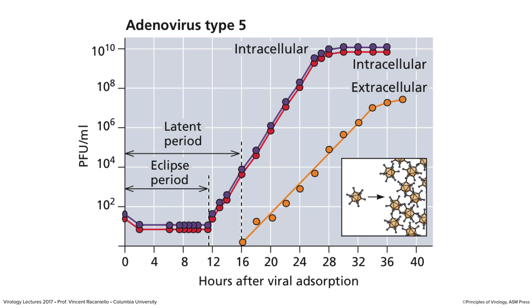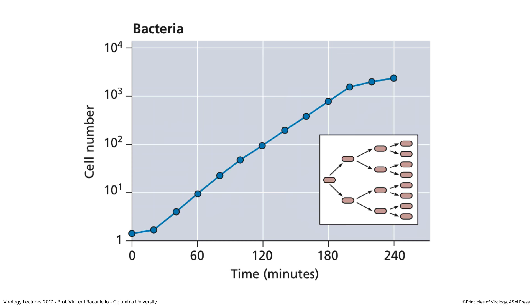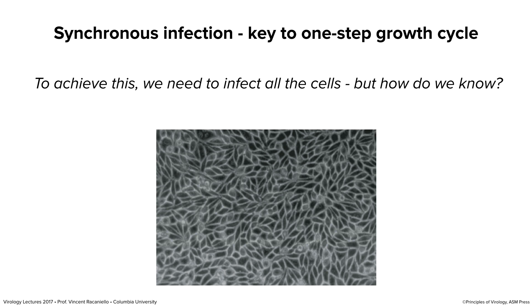That illustrates all the different kinds of information you can get from a single-step growth curve. This is very different from bacteria — put a single bacterium in broth and it divides by binary fission with no eclipse period. The eclipse period in viruses is the time during which all viral proteins have to be made, genomes replicated, and assembly takes place. Synchronous infection is the key to the one-step growth curve — infecting all cells to initiate infection at the same time. How would you know how much virus to put on cells to infect all of them? That's where multiplicity of infection comes in.